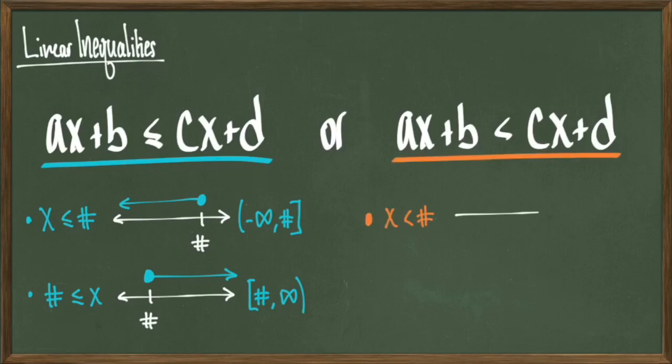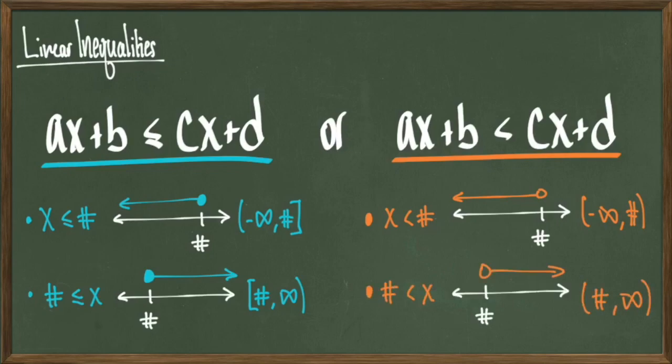Now, if I strictly have a less than sign, my answers look very similar, although I'm going to have open parentheses around the numbers that I find instead of closed square brackets. So if I find that x is less than some number that I find from this inequality, then my solution set looks like negative infinity to that number open at that number. And then lastly, if the number is less than x, then my solution set looks like open bracket at that number to positive infinity.